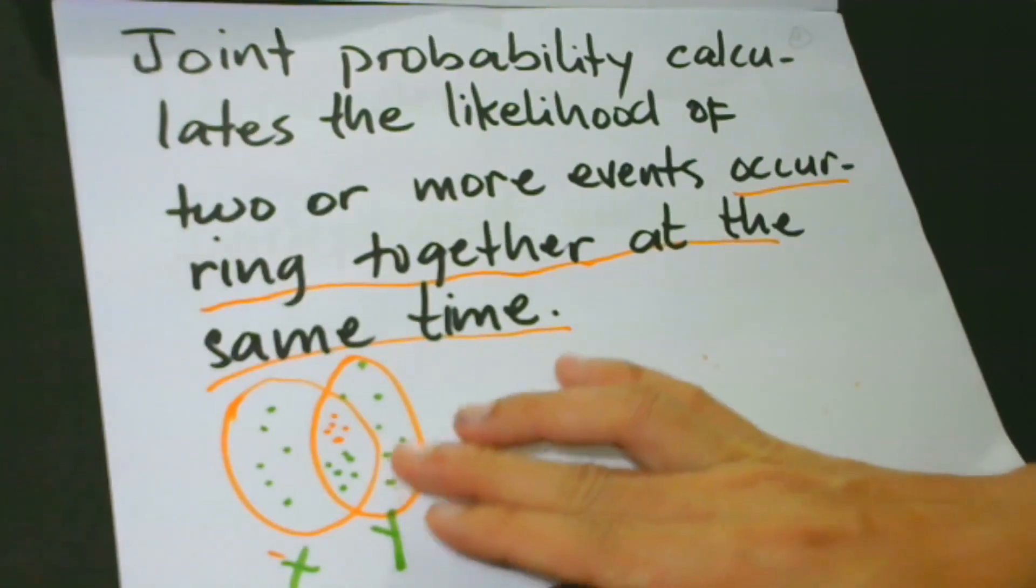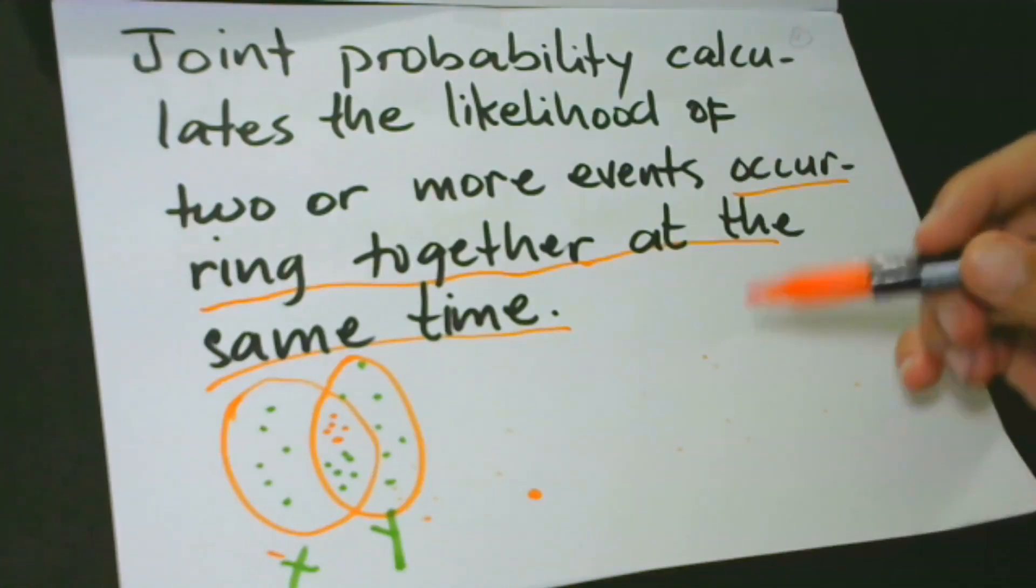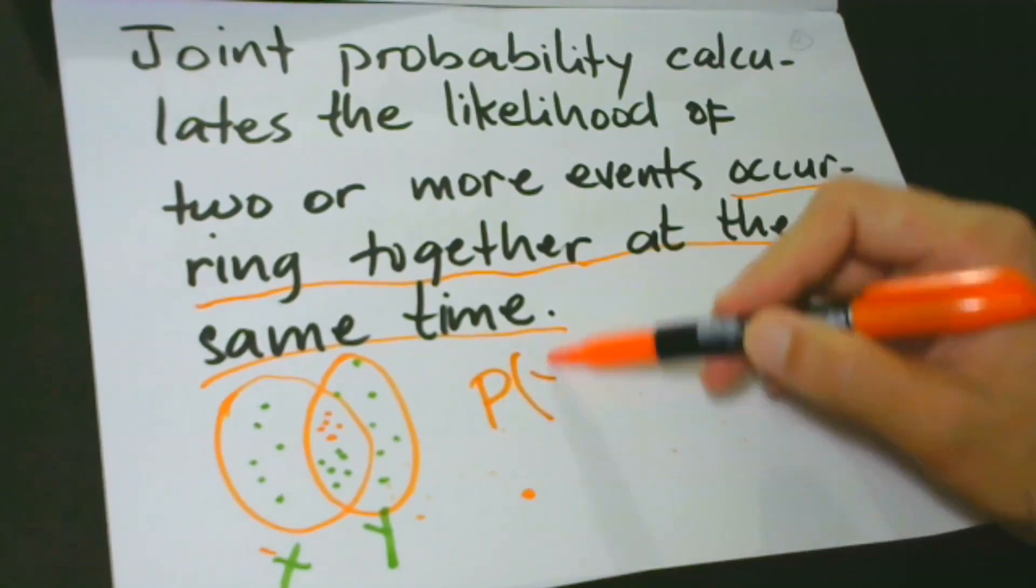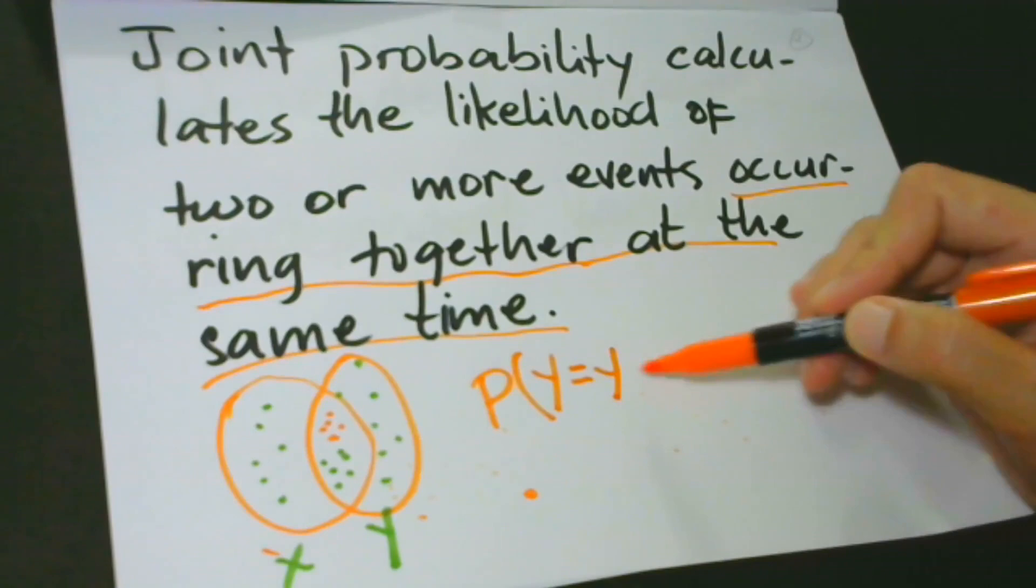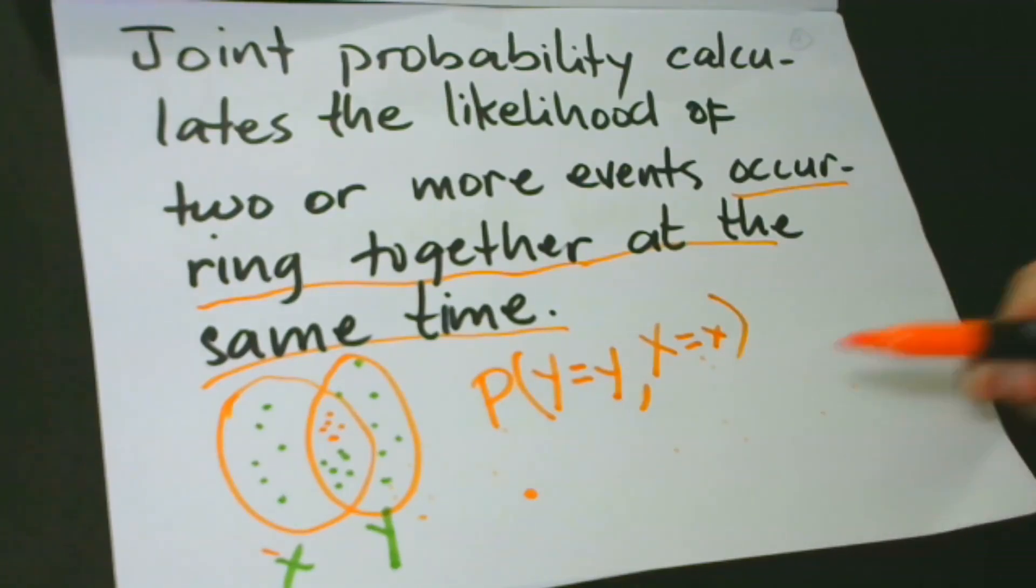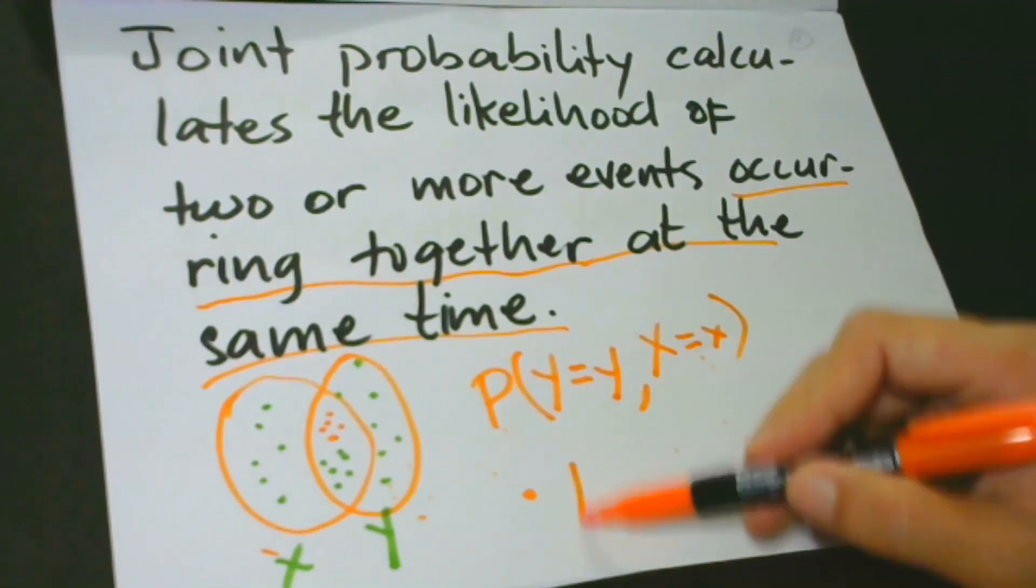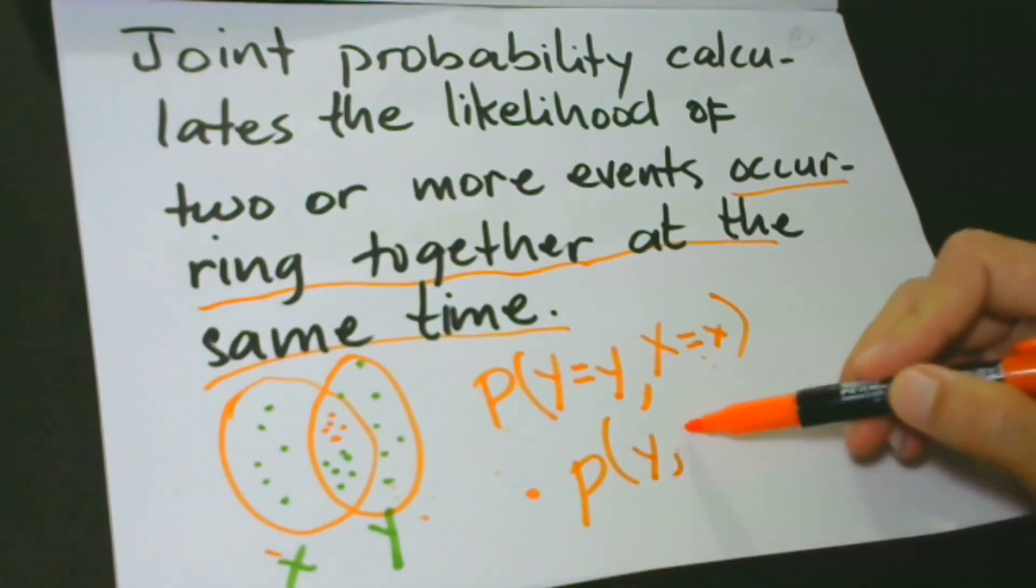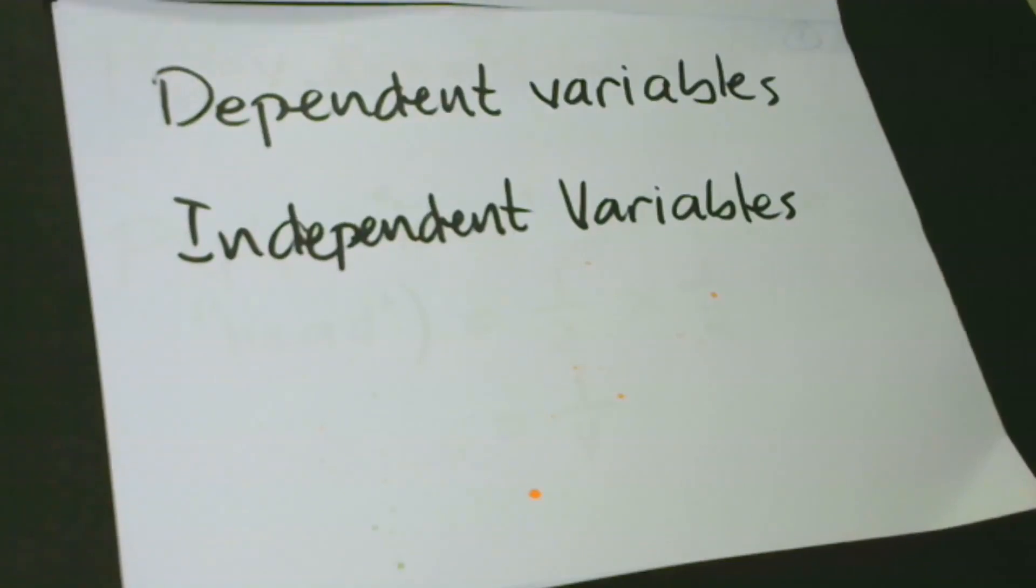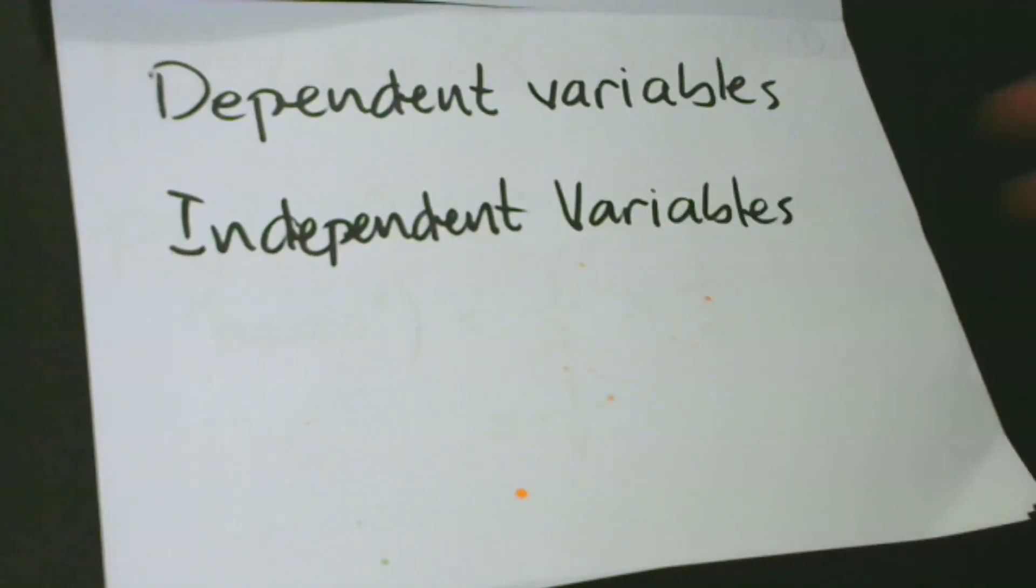This is the joint probability, and this is denoted by this equation, or by this statement. P, Y takes the value of Y, and X takes the value of X. It also has its functional form, which is P, Y, and X. Dealing with joint probabilities depends on whether or not the random variables are dependent. It can be dependent. It can be independent.